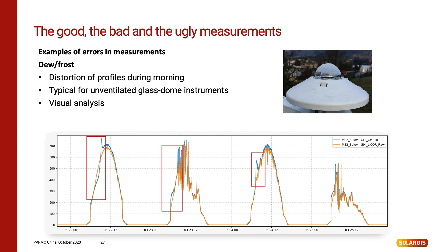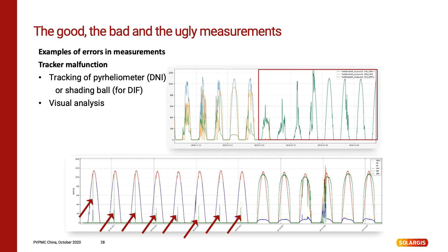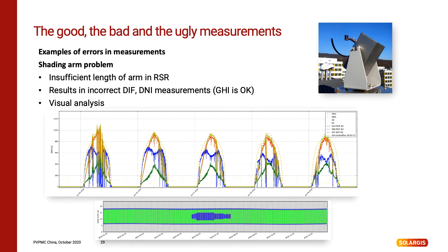We need the sun to evaporate dew. Ventilation units or heated domes may help to remove this issue. These pictures illustrate the situation of moving parts where the sensor tracker lost power or got stuck. Usually it is the case of pyrheliometers or diffuse pyranometers shaded by a shading ball. In both cases, diffuse will be equal to global irradiation and DNI is not measured or measured only as peaks. Another type of mechanical problem is the insufficient length of the shading arm mounted on an RSR. In this case, during a certain period of the year, the sun was in a position where the rotating arm of the RSR was not able to create a shadow over the sensor, so diffuse measurements were distorted.